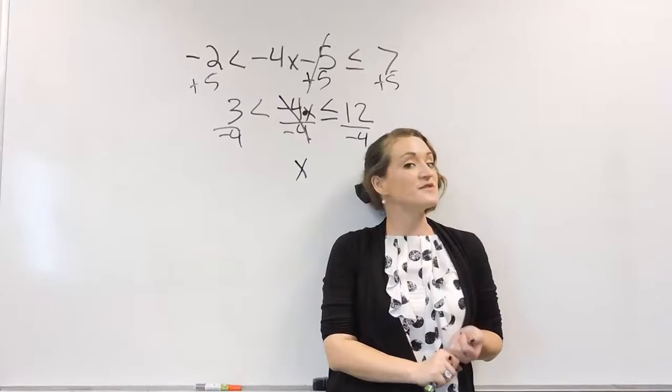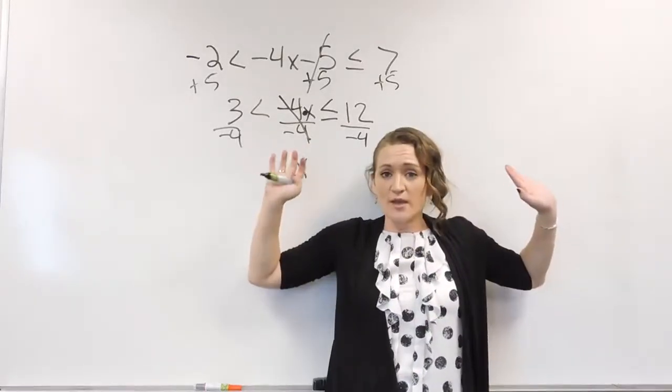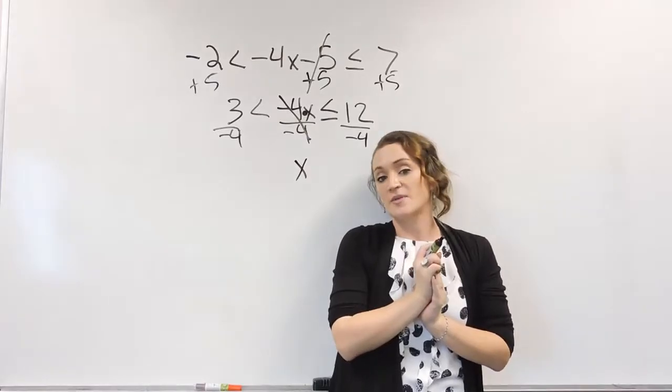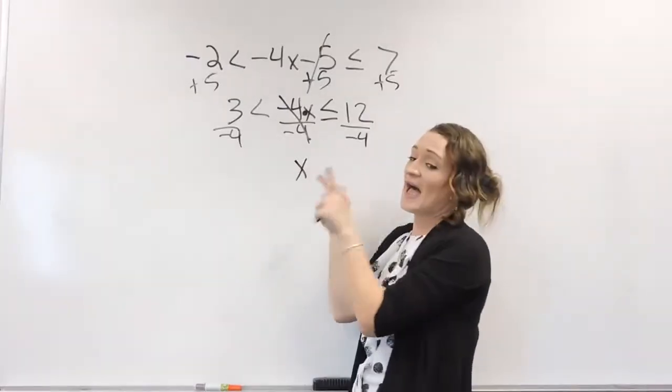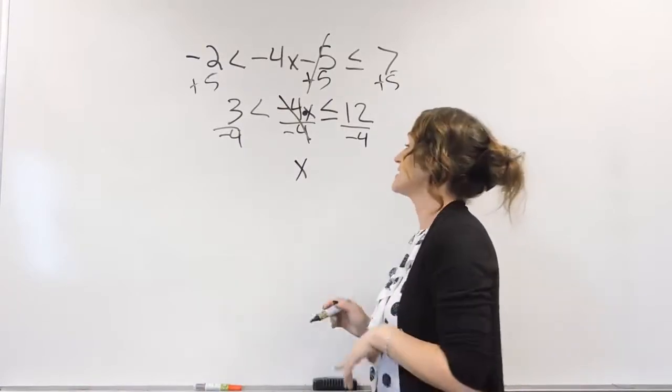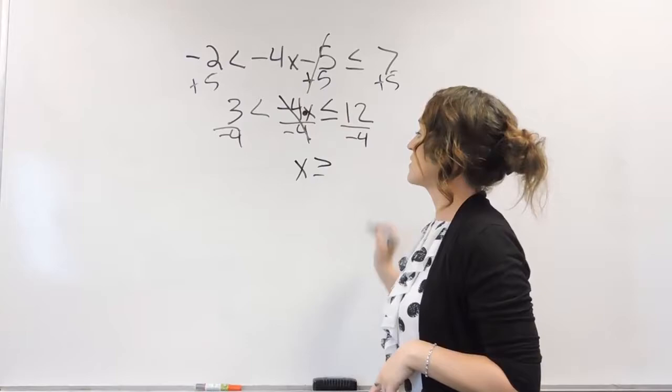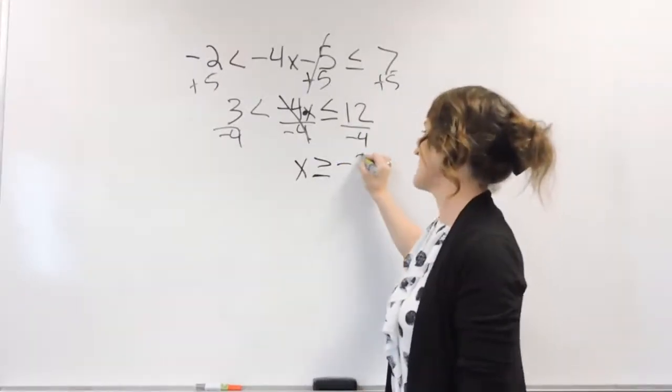Negative 4 over negative 4 cancels and drop down x. Now do remember the one difference that is different in solving linear inequalities than solving equations is when you multiply or divide by a negative, you must flip the inequality symbols. So this is now a greater than or equal to. Otherwise, 12 divided by negative 4 is negative 3.